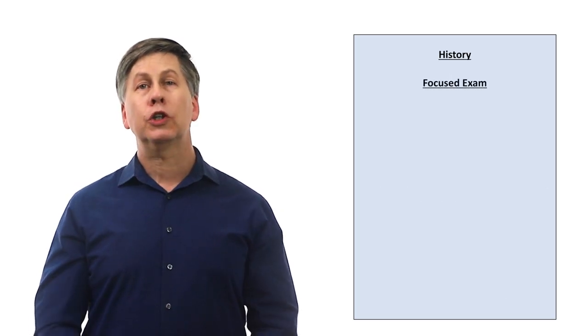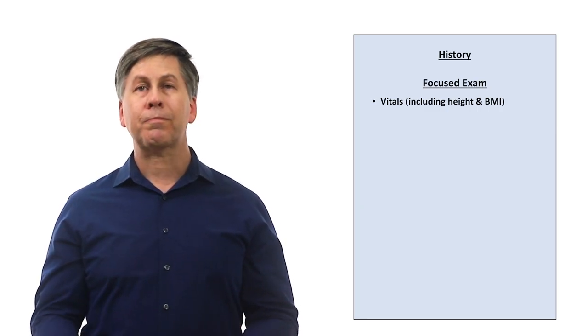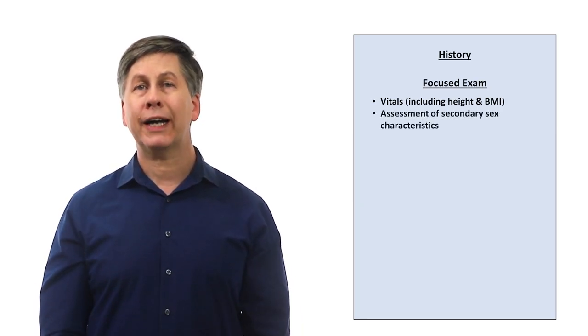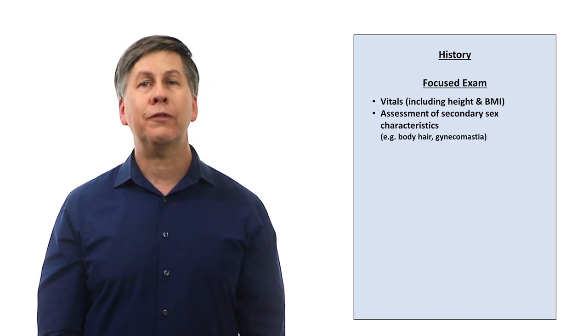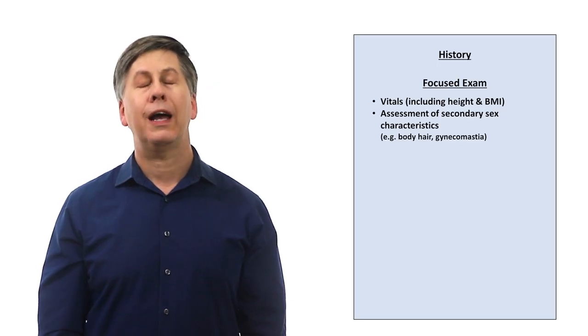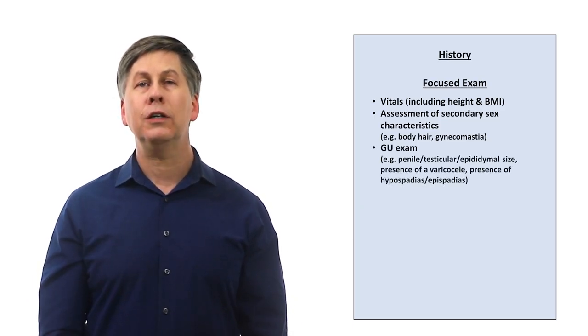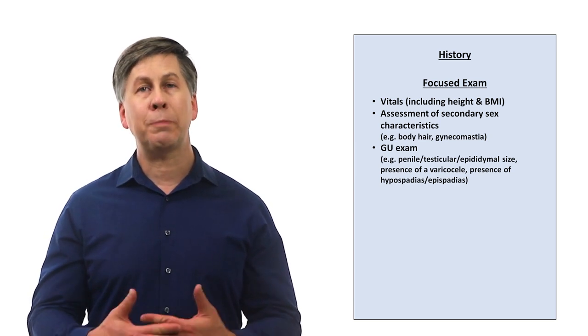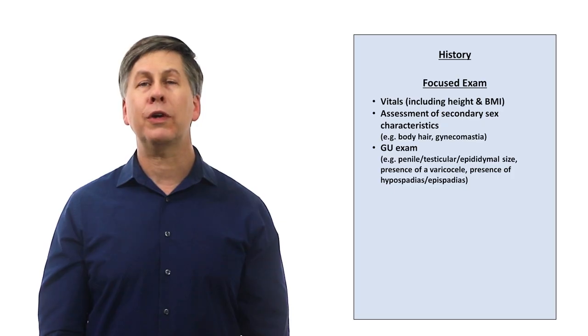A focused physical exam should start with vitals, including height and body mass index. The exam should also include an assessment of secondary sex characteristics, such as the distribution of body hair, and the presence of gynecomastia. And of course, a GU exam, including an assessment of penile, testicular, and epididymal size, presence of a varicocele, and the presence of hypospadias or epispadias, which are abnormalities in the location of the opening of the urethra.